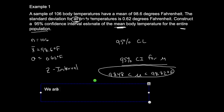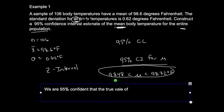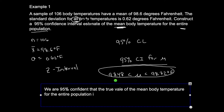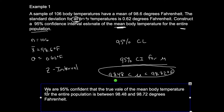We are 95% confident that the true value of the mean body temperature for the entire population is between 98.48 and 98.72 degrees Fahrenheit. The important part is not only to determine what kind of confidence interval you're doing, but if it's for a mean, you have to think about whether sigma is known or unknown. Here, 'standard deviation for all body temperatures' means sigma is known, so we use Z-interval.